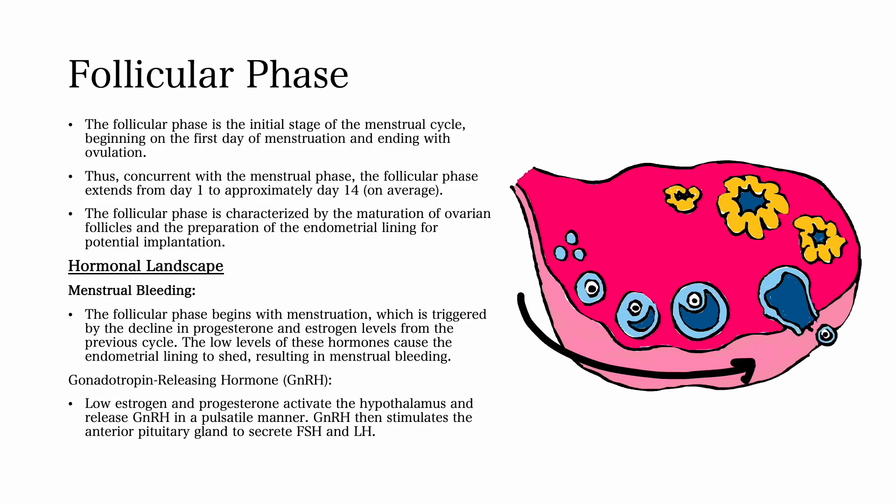The follicular phase is the initial stage of the menstrual cycle, beginning on the first day of menstruation and ending with ovulation. Concurrent with the menstrual phase, the follicular phase extends from day 1 to approximately day 14 on average. It is characterized by the maturation of ovarian follicles and the preparation of the endometrial lining for potential implantation.